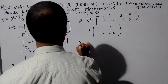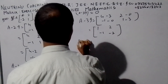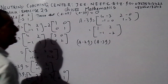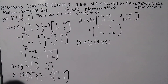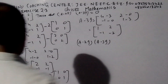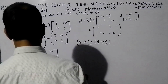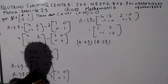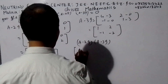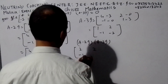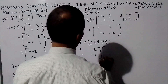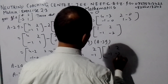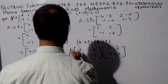Now we multiply A minus 2I into A minus 3I. This point is A minus 2I, and here we have A minus 2I — here we have two, two, minus one, minus one. A minus 3I is available; we have to get one, two, minus one, one. Now we multiply.